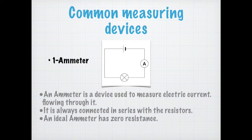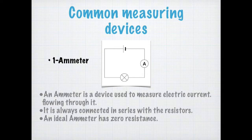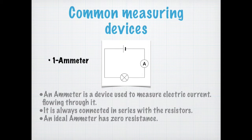An ammeter is always connected in series with the resistors you want to measure the current through, and an ideal ammeter has zero resistance. Let me tell you why. In a series combination, the current doesn't directly change. But if the total resistance of the circuit increases, then the current flowing through each resistor is going to decrease — you can get that from Ohm's law, which states that current and resistance are inversely proportional.